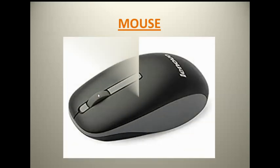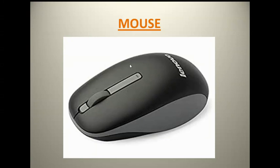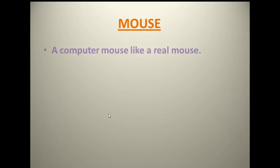The fourth main part of a computer is mouse. This is the picture of a mouse. This mouse actually looks like a real mouse that you find in your home. It has two buttons — the right button and the left button.